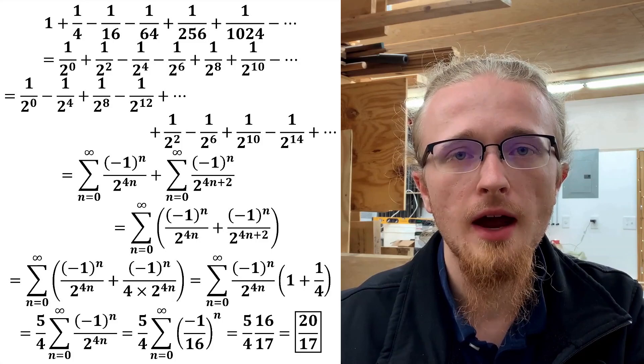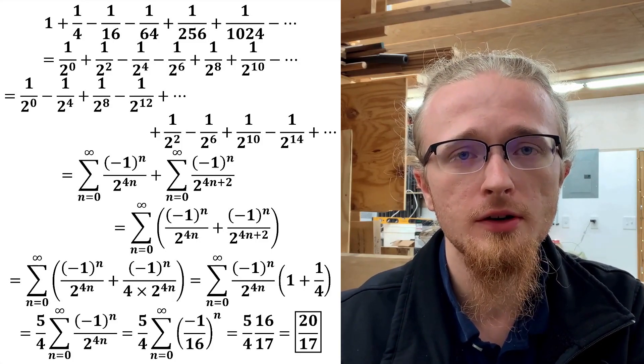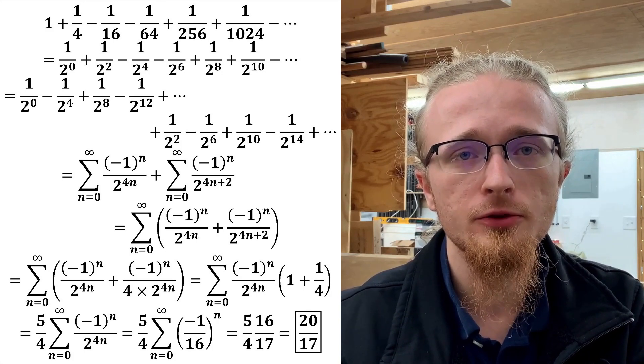We can then substitute that into what we're actually trying to evaluate, and we get that the sum we were originally trying to do simply equals 20 over 17.